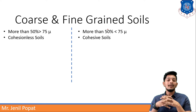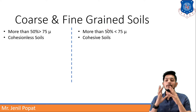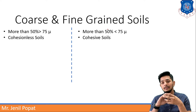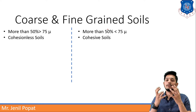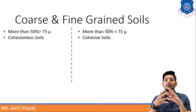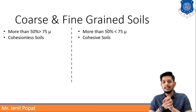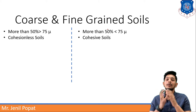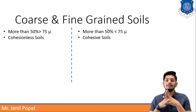If the soil is cohesion-less then it will be a coarse-grained soil. If it is a cohesive soil then it is a fine-grained soil. Cohesion means the attraction between particles which are of the same material. If the soil is having some cohesion it will be a fine-grained soil.